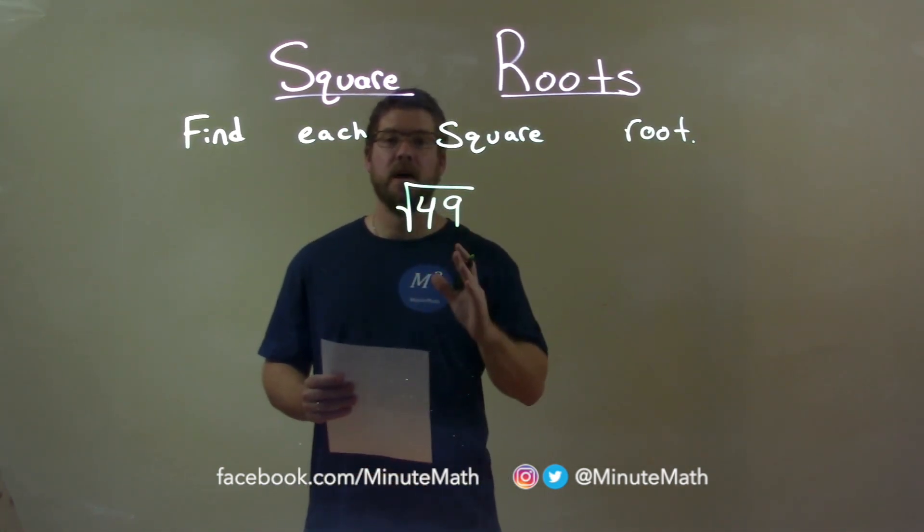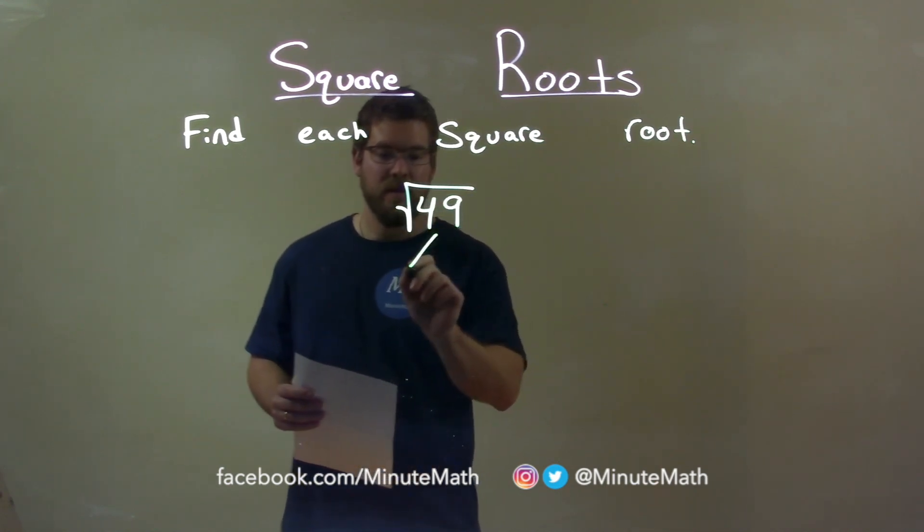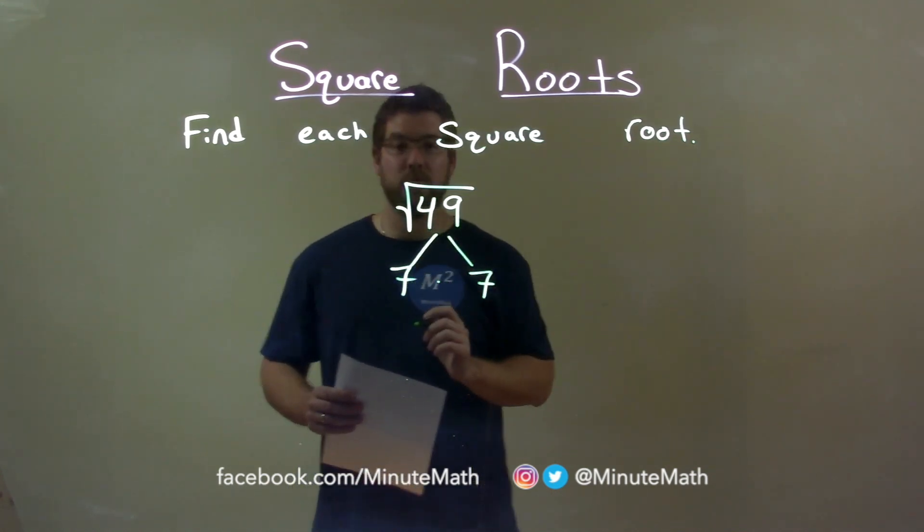What number times itself is 49? That number is 7. 7 times 7 is equal to 49.